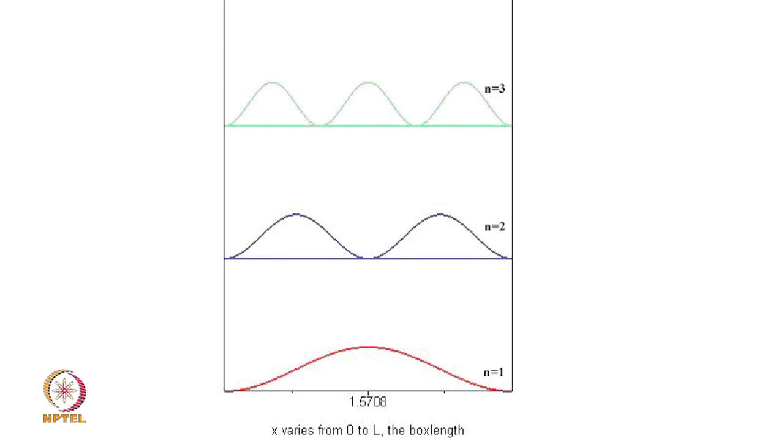If you plot the ψ*ψ for the first wave function, namely n equal to 1, you see that this is nothing but the half sin wave with a little bit of tapering on the edges.